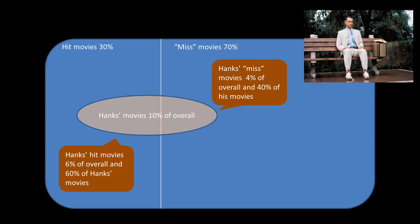Given this setup, we can calculate many probabilities. The probability that a randomly chosen movie is a hit: 0.3. A miss: 0.7. A Tom Hanks movie: 0.1, because 10% of movies are Tom Hanks movies. What is the probability that a randomly chosen movie is a Tom Hanks hit movie? That's not just whether it's a hit, but a hit in which Tom Hanks appeared. We already know that region occupies 6% of the area, so a randomly chosen movie has a probability of 0.06 of being a Hanks hit movie.